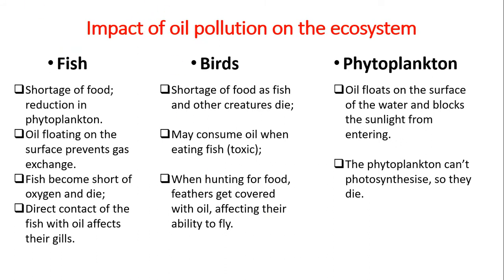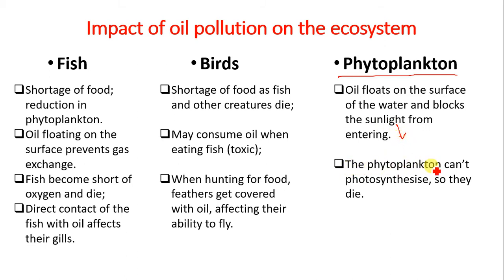Looking at the impact of oil pollution on the ecosystem in chronological order, we start with phytoplankton. Phytoplankton are producers. Oil floats on the surface of the water during an oil spill and blocks sunlight from penetrating into the water. As a result, phytoplankton cannot photosynthesize and they die.